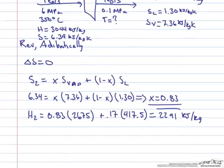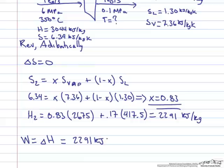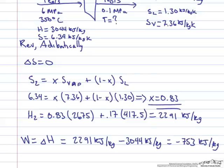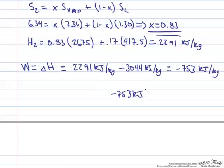To find the work for an adiabatic turbine, work equals delta H: H_outlet minus H_inlet = 2291 minus 3044 = minus 753 kJ per kg. Multiplying by the mass flow rate of 1 kg per second gives approximately minus 750 kJ per second.